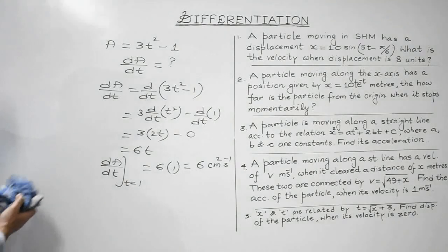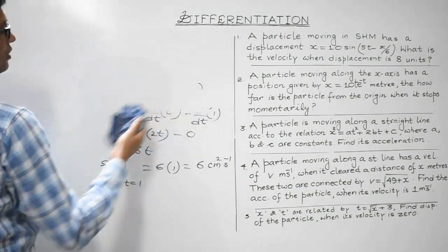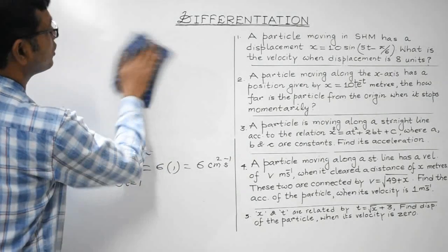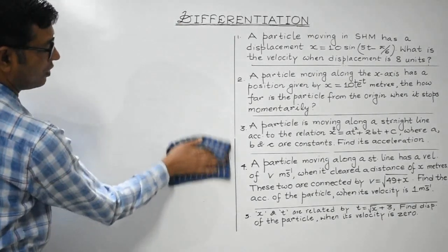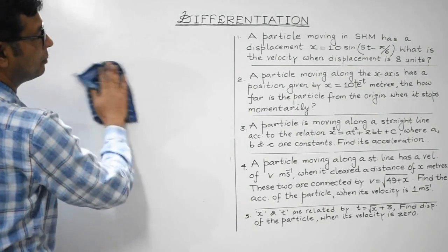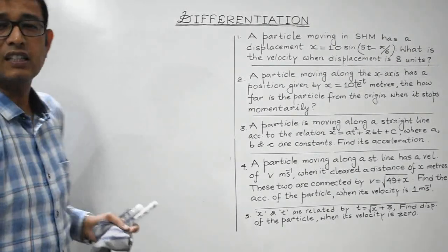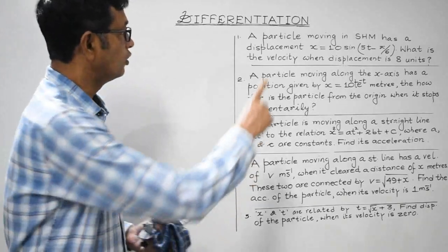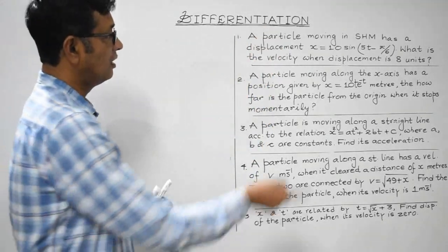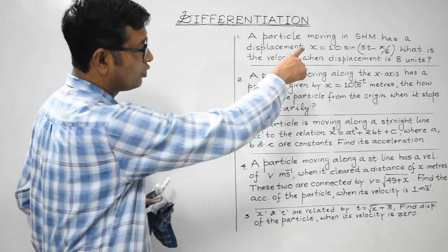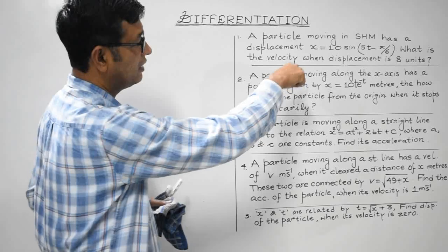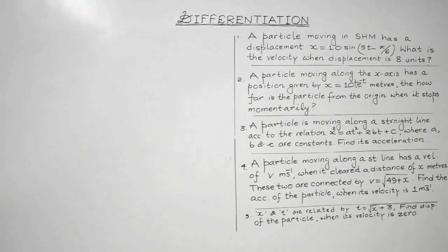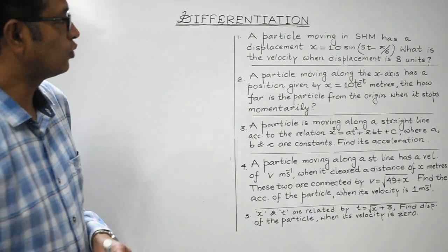After these basic questions, let us attempt the main set. First question: a particle moving in SHM — simple harmonic motion, an oscillatory or vibratory motion — has displacement given by x = 10 sin(5t − π/6). What is the velocity when the displacement is 8 units?